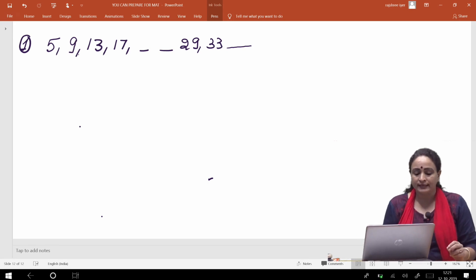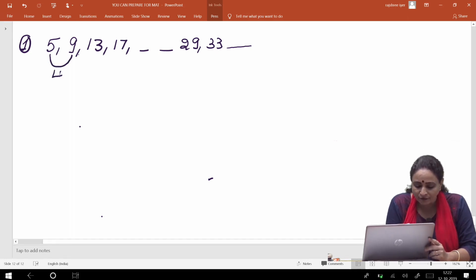Kya dikh raha hai aapko? Dekhi, yahan par aapka pehla jo number hai wo hai 5 and uske baad 9, uske baad 13, 17. Kuch samjha? Yes, haan aapko dikh gaya?